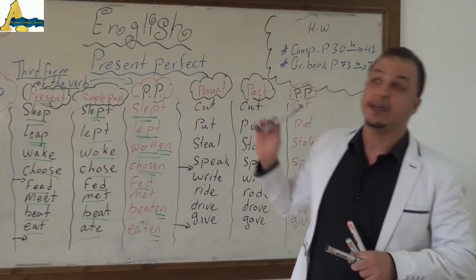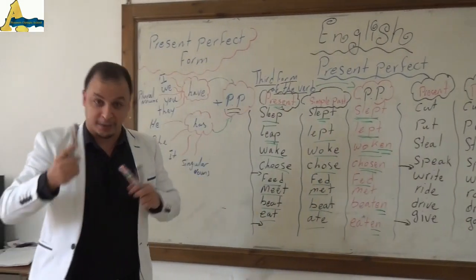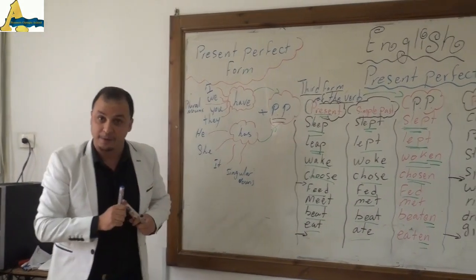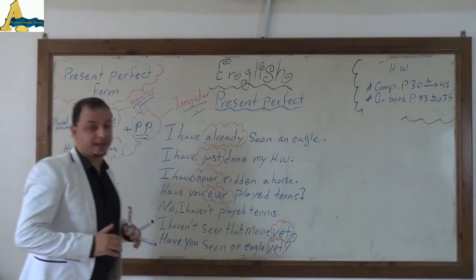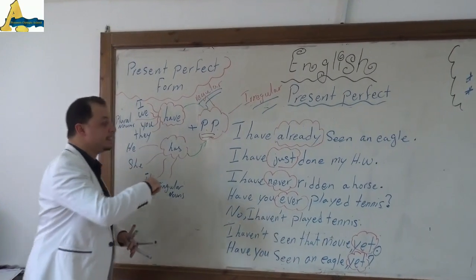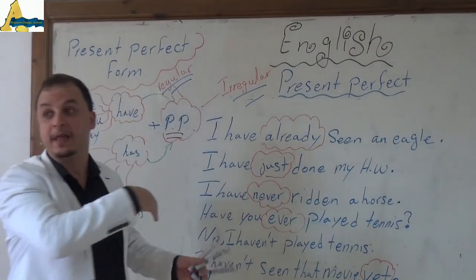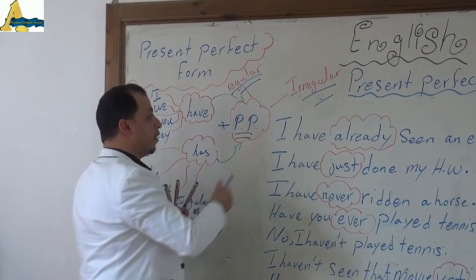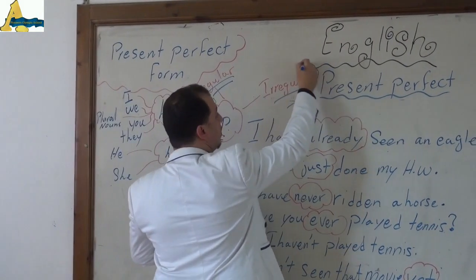That's going to be a really good way to memorize the third form of the verb. We're going to talk again about the form and see some examples after a while. Welcome back Junior Four. Today we're going to complete talking about the present perfect. We have seen the irregular verbs — such as write, wrote, written.